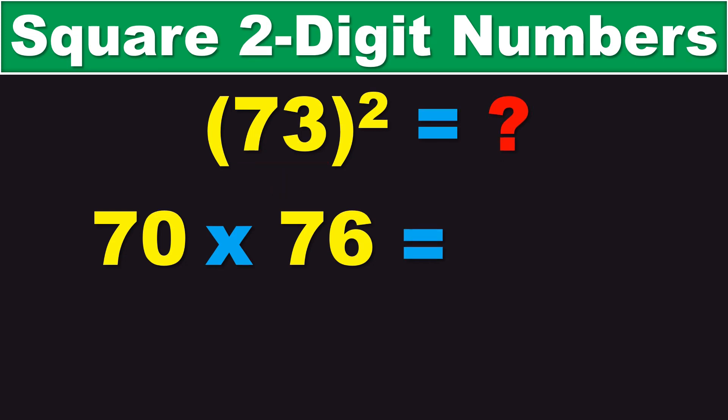And, then, we multiply the numbers 70 and 76 that we obtained. And, doing the math, the answer is 5320.